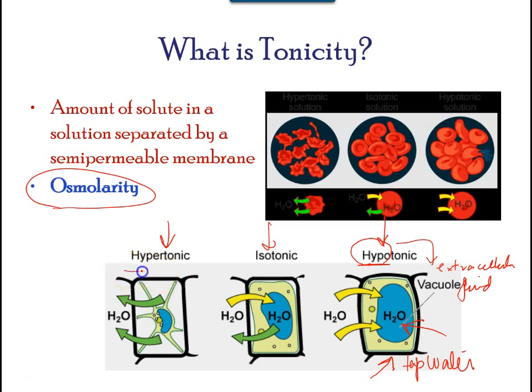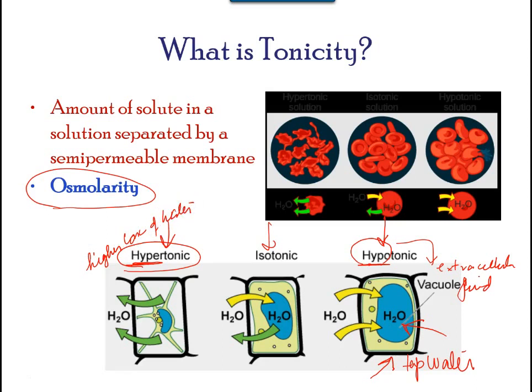In a hypertonic solution, the prefix 'hyper' refers to the extracellular fluid having a higher concentration of solutes than the cell's cytoplasm. The fluid contains less water than the cell, such as seawater. Because the cell has a lower concentration of solutes, the water will leave the cell. In fact, the solute is drawing the water out of the cell. This may cause an animal cell to shrivel or crenate.